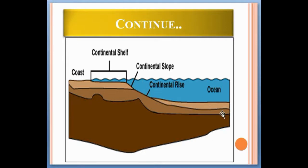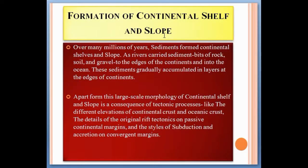The slope gradient is two to five degrees but the water depth is very high. Over many millions of years, sediments formed the continental shelf and slopes as rivers carried sediment — bits of rock, soil, and gravel — to the edges of continents and into the ocean, where they gradually accumulated in layers.